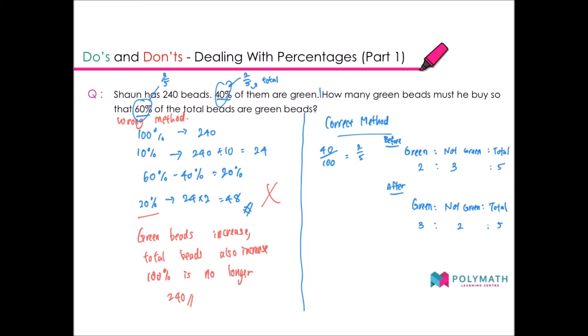Here we already have the value given to us, 240 beads. So we can find out exactly how many green beads are there at first. The total is actually 240, so these 5 units over here is actually 240. I will write 5 units equals 240, 1 unit equals 240 divided by 5, which is 48.